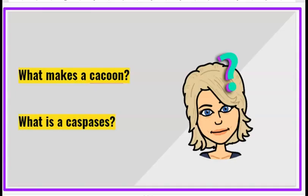Let's think — what makes a cocoon? And what are caspases? Hopefully you said a moth makes a cocoon, not a butterfly. Oftentimes people get those two confused — a moth makes a cocoon and a butterfly makes a chrysalis. Caspases — that's the release of enzymes which dissolve the cells and other organs in the caterpillar, and that is what allows the caterpillar to transform and change its body into a butterfly.